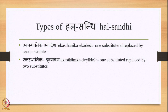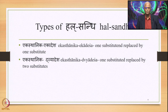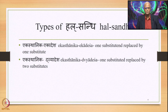First, we said that broadly Hal Sandhi can be divided into two: Ekasthanika Ekadesha and Ekasthanika Dvyadesha. In contrast with Ach Sandhi, where you also have Ekasthanika Ekadesha, the difference is Ekasthanika Dvyadesha. In the Ach Sandhi, it is Dvishthanika Ekadesha which is stated also as an Adhikara, and we studied five instances of Dvishthanika Ekadesha of Ach Sandhi.